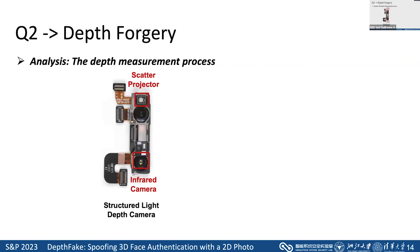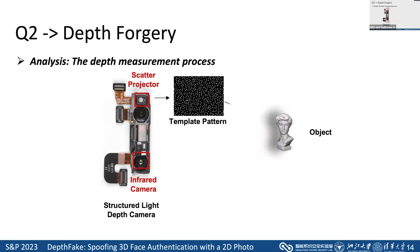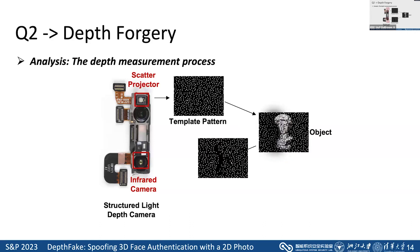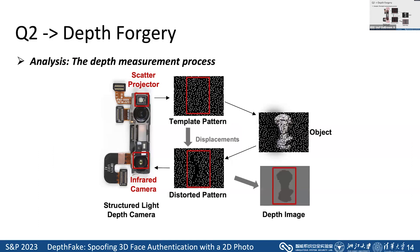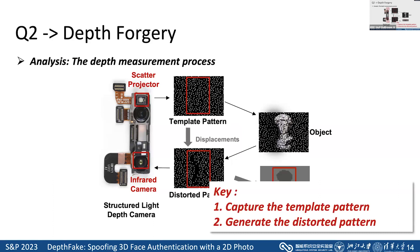The structured light camera is widely used in face authentication. It typically contains a scatter projector and an infrared camera. To measure depth information, the scatter projector first projects a template pattern; the infrared camera then captures the reflected pattern, which is distorted by the different depths of the object surface. By measuring the displacements between each scatter point, the camera calculates the depth image. According to this, we find the key to generating the desired depth image is to capture the template pattern and then generate the distorted pattern.